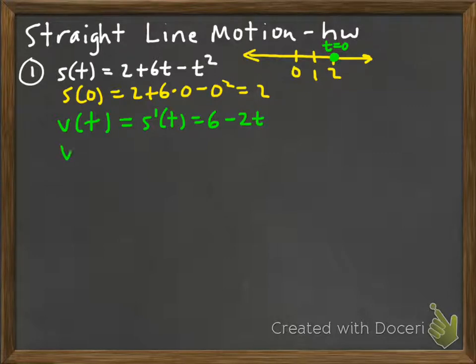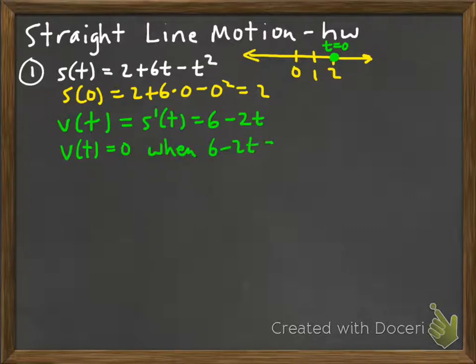When is the velocity equal to 0? In other words, when is this particle stopped? The velocity equals 0 when 6 minus 2t equals 0, so 2t equals 6, meaning at time t equals 3 this particle has stopped moving.